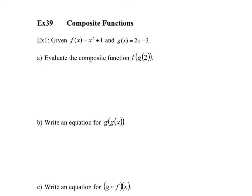What that means is, for example in this case, you have g of 2 inside of f of x. Any time you deal with these, you're going to work your way inside out. So we're going to first find g of 2. So g of 2 is equal to 2 times 2 minus 3, which is 4 minus 3, which is 1. So g of 2 is equal to 1.